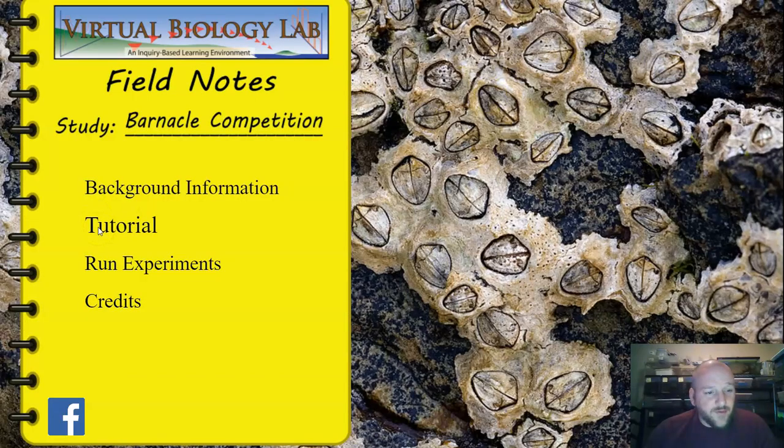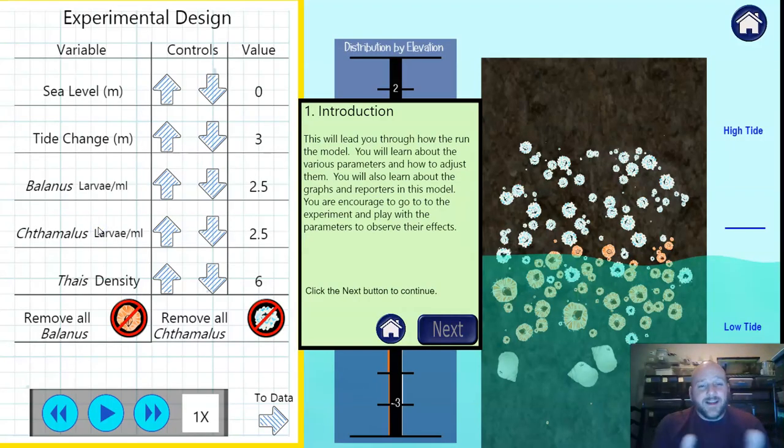From here we move on and there's a tutorial, and this tutorial explains how the lab works. I'm not going to do too much on this because I'll explain a little bit about the lab, but basically we can manipulate a lot of different variables all listed here on the left. We can manipulate the sea level, the tide change, so how much the water goes up and down, the starting presence of each of the different populations, as well as the density of a third population. We can also remove all of one of the species, which can be helpful to us too if we want to look at what happens in the absence of competition.